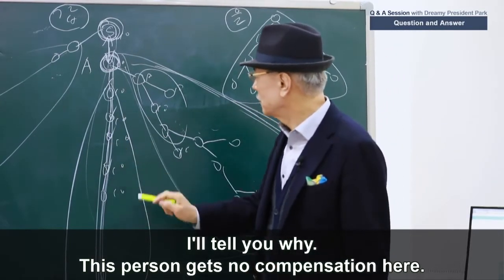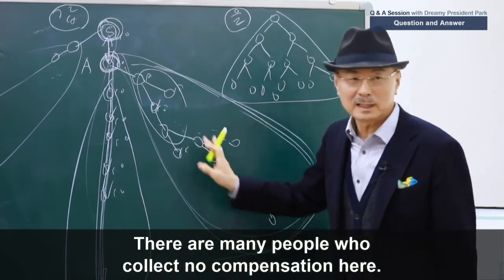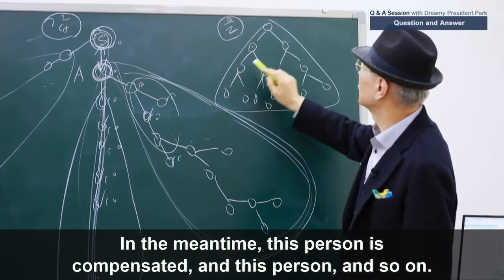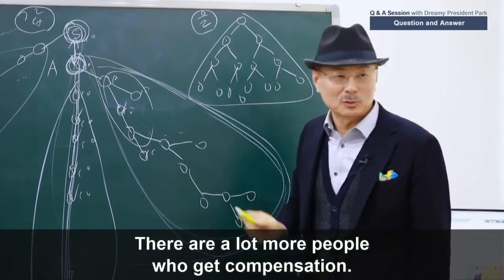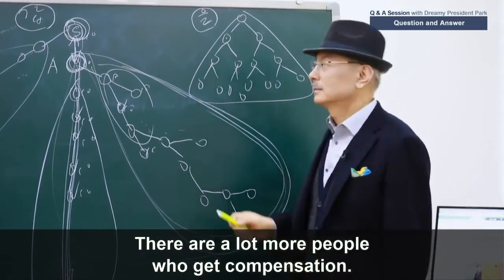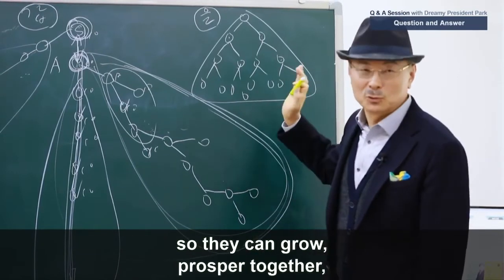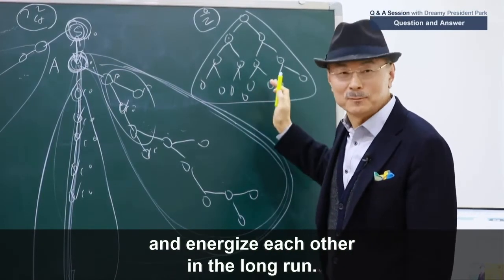This person gets no compensation here. No compensation for this person, this person. There are many people who collect no compensation here. In the meantime, this person is compensated and this person and so on. And there are a lot more people who get compensation. The total sum of members' compensation is greater in this group so they can grow, prosper together, and energize each other in the long run.